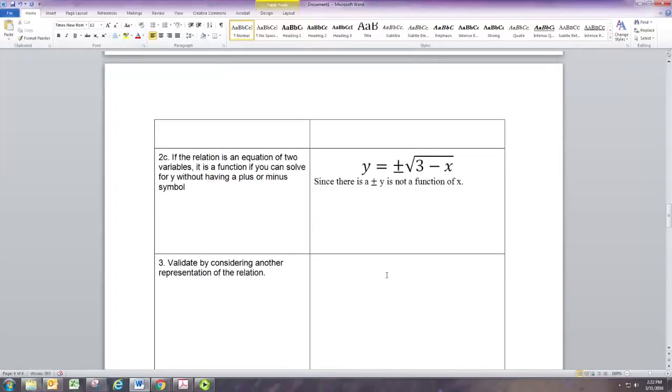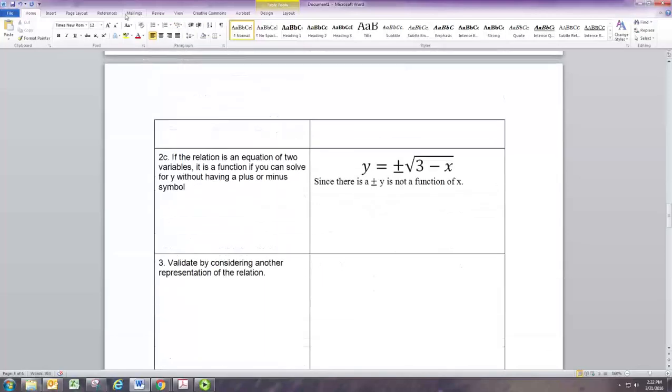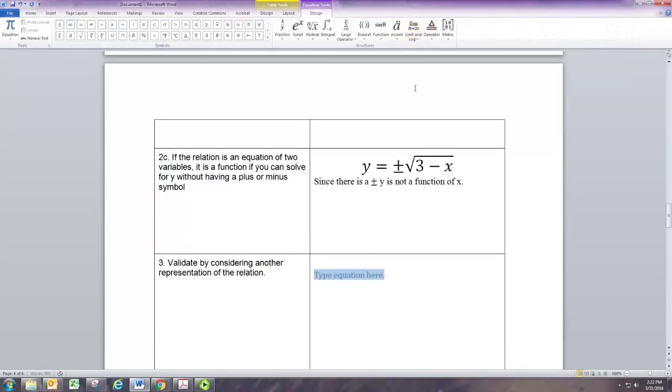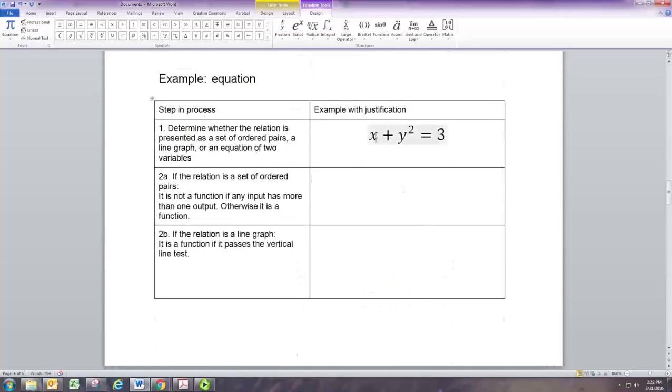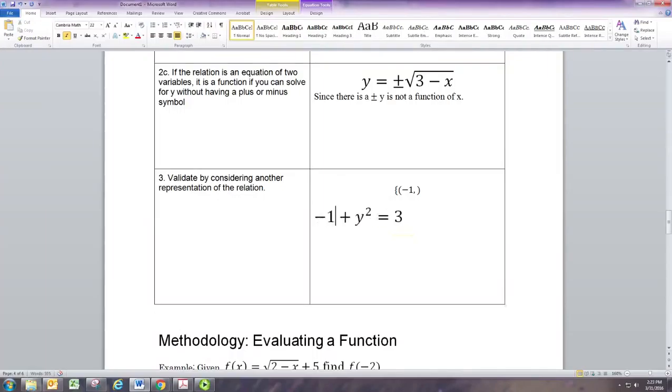You can validate this by looking at some of the ordered pairs. And one thing you can do is you can actually put in an x value like negative one. If x is negative one, then we can figure out what y is by solving for y. And I guess we should just use this version if we're going to solve for y.